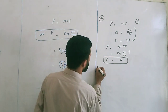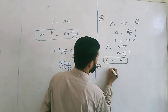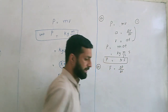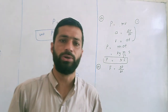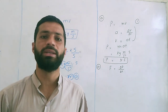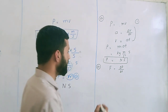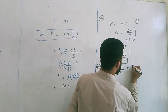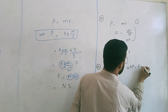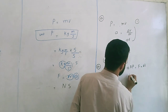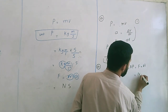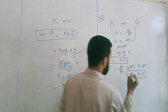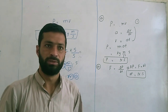Or, we can prove it from another equation: F is equal to delta P divided by delta T. As we discussed in earlier videos, the rate of change of linear momentum is called force. So, momentum will become delta P is equal to F multiplied by delta T. The unit of force is Newton and this is second. So, delta P is equal to Newton second.